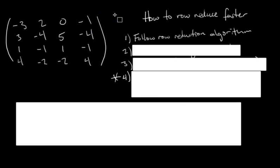The first tip is to follow the row reduction algorithm, which was taught in lecture and I'll go over it again. Basically, it's just a process that you follow to make sure that your row reduction steps are taking you in the right direction and as efficiently as possible to getting your matrix to reduced row echelon form.